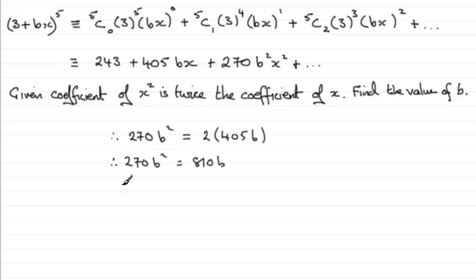What we've got is a quadratic equation, so it would be a good idea to bring the 810b to the left-hand side. In other words, subtract 810b from both sides. And so we get 270b squared minus 810b equals 0.